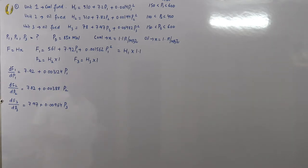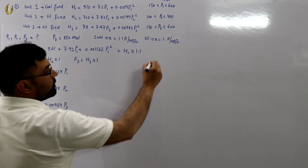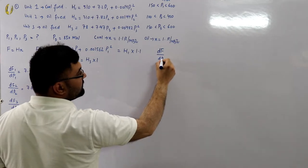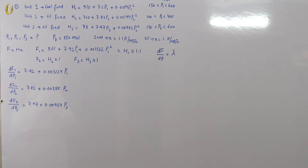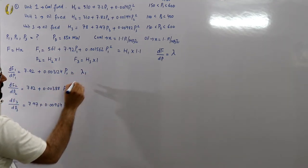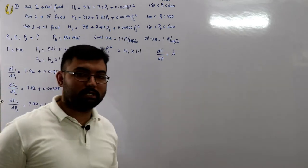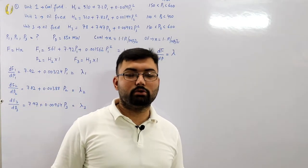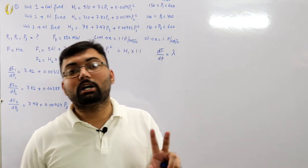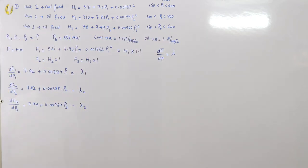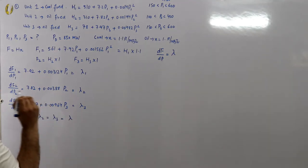We had the conclusion that df/dp = λ, where λ is the incremental cost of electrical energy. So df1/dp1 = λ1, df2/dp2 = λ2, df3/dp3 = λ3. Since all units serve the same load center using the same fuel, λ1 = λ2 = λ3 = λ.